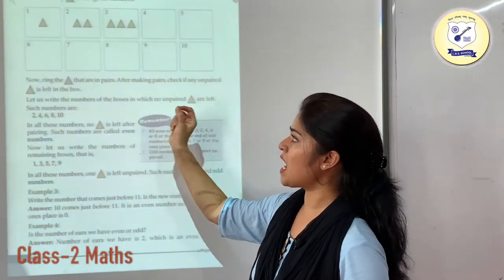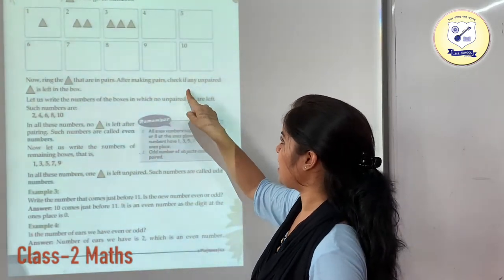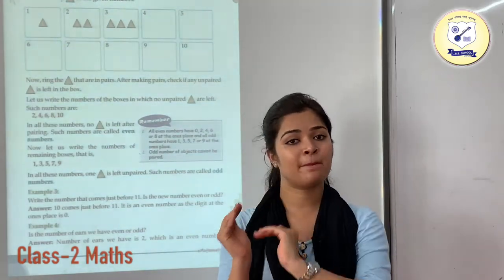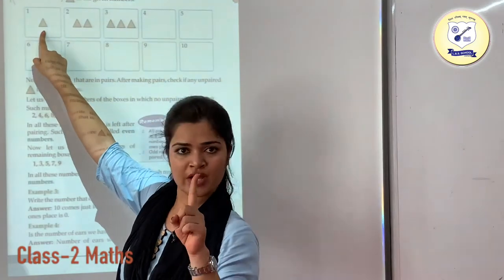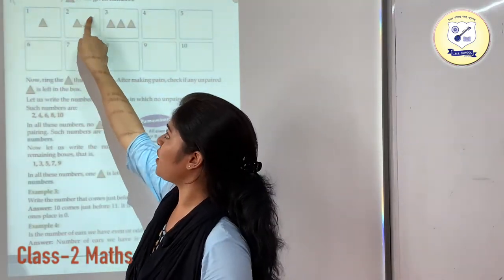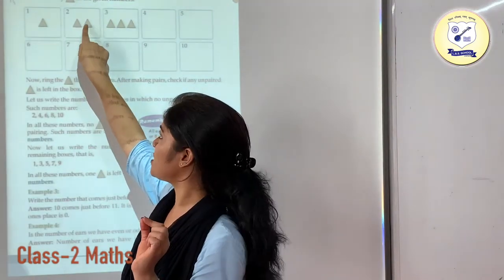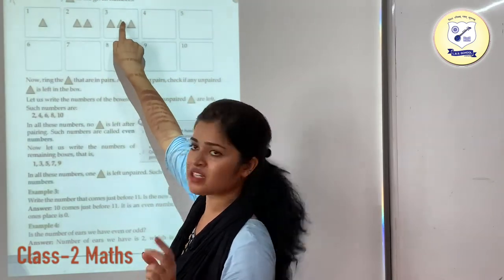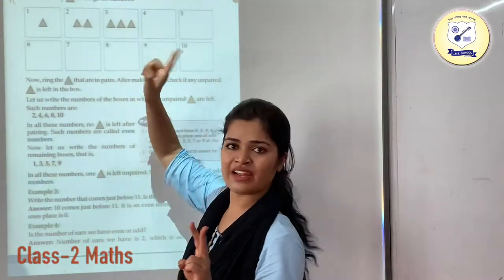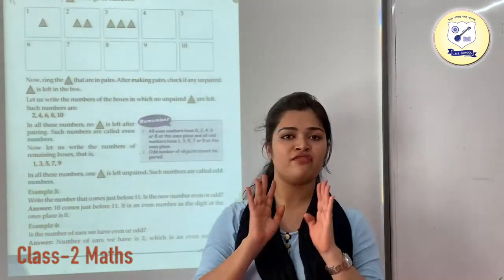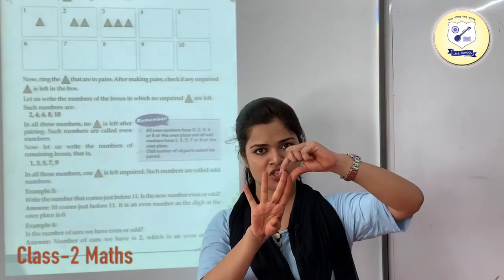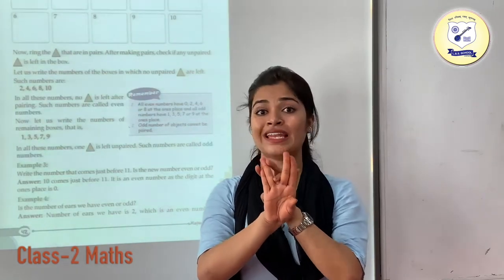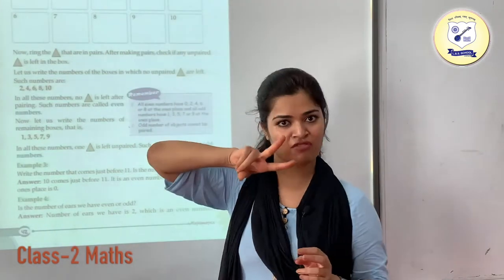Now pair the triangles that are in pairs. After making pairs, check if any unpaired triangle is left. Here we have just 1 so it cannot form a pair. Here you have 2 so it can make a pair. For 3 triangles, I have circled 2 as a pair — and we are left with 1 triangle. For 4 triangles, I have made a pair of 2 and these 2, giving 2 pairs with no triangle left. So we have 2 pairs of triangles.